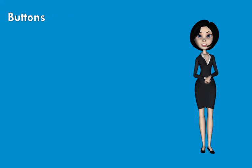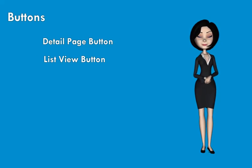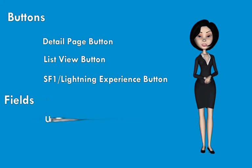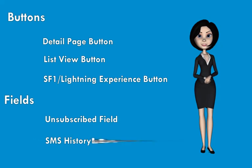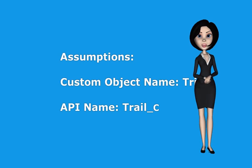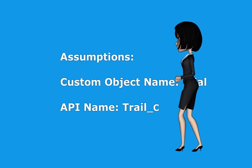For this we need to create buttons. Firstly, we will create a detail page button. Next, a list view button. Another will be an SF1 or Lightning Experience button. Then we would create an unsubscribe field, and finally a lookup field SMS history to relate your messages in the list view.